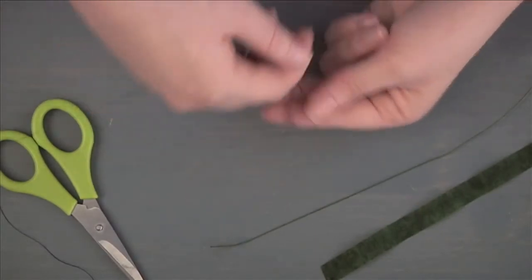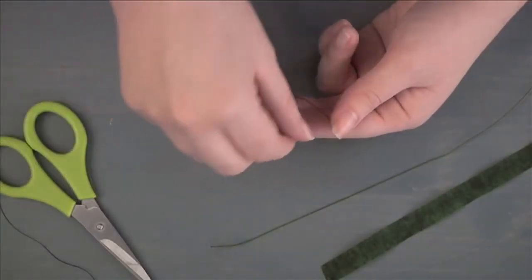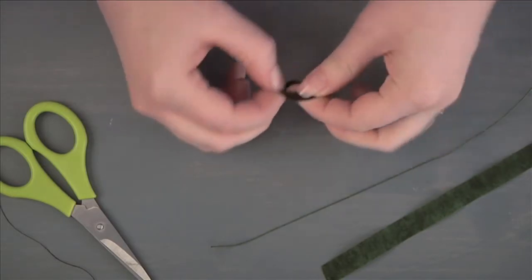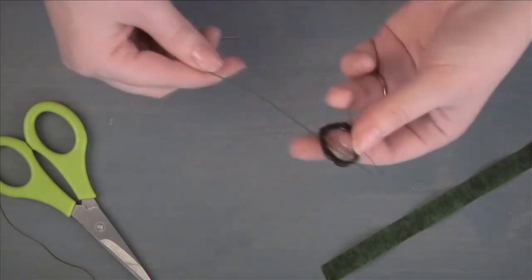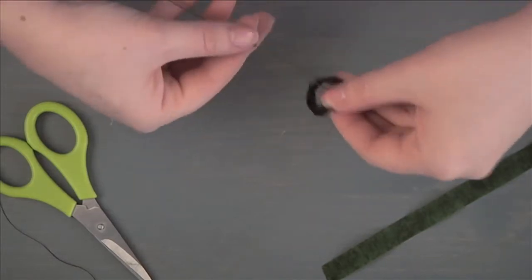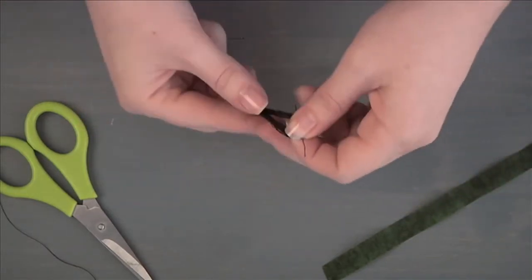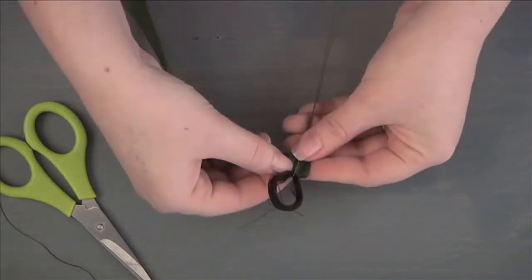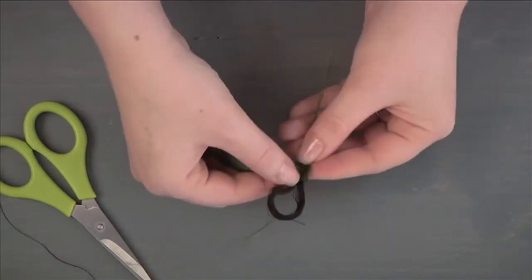To make stamens, wrap black cotton thread around two fingers 25 to 30 times. Remove from fingers and insert floral wire through the center. Fold wire in half and twist the thread loop and wire as tightly as possible, slightly overlapping the base of the loop. Tape wire to secure the threads.